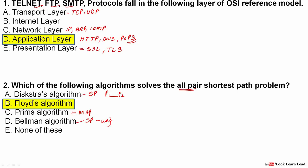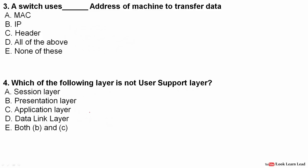Next: a switch uses which address of a machine to transfer data? A switch is a data link layer device, and the address used at the data link layer is the MAC address, also called the physical address. So the answer is MAC address.